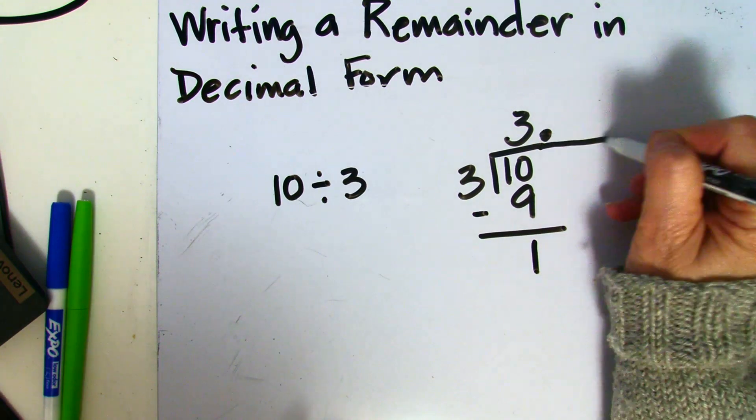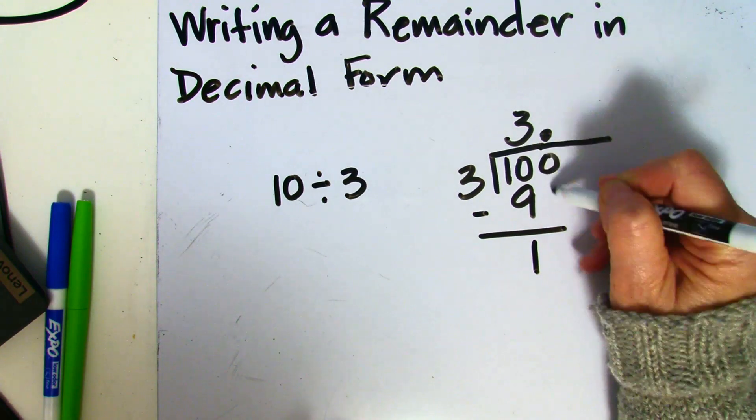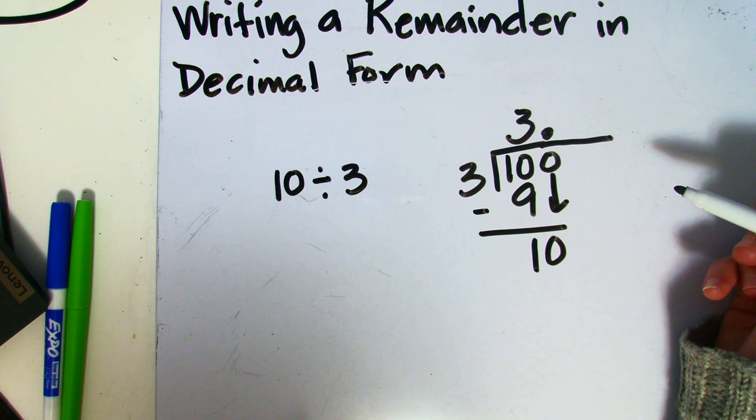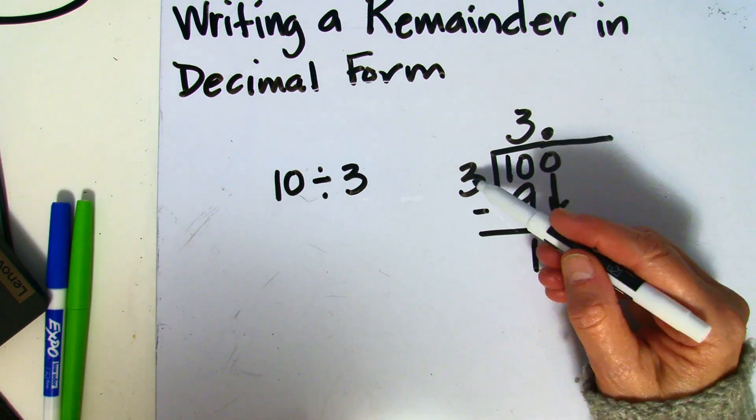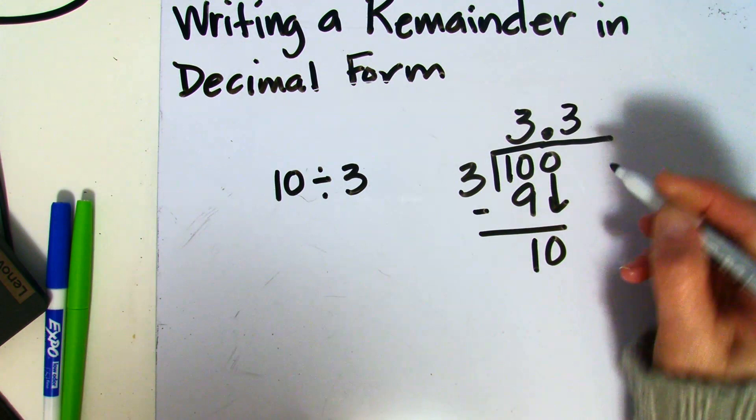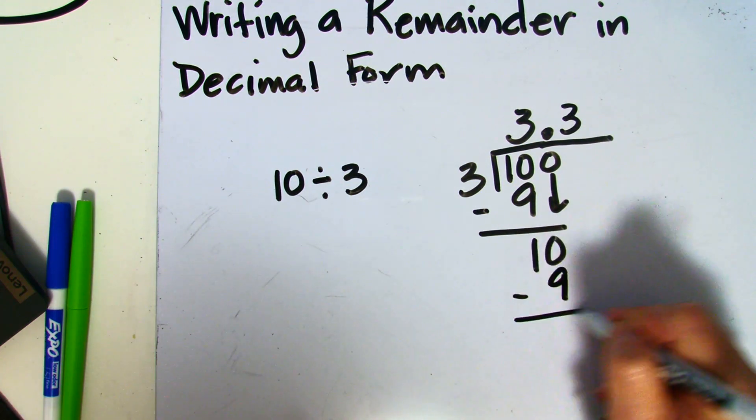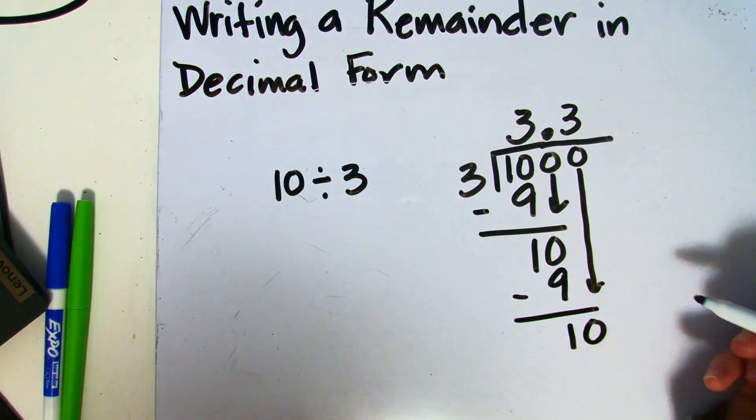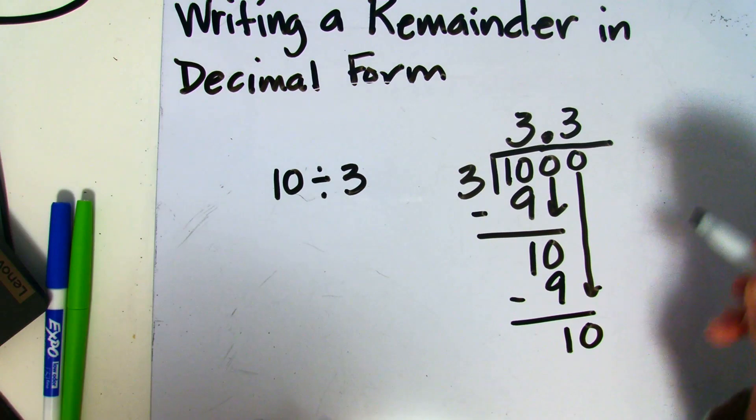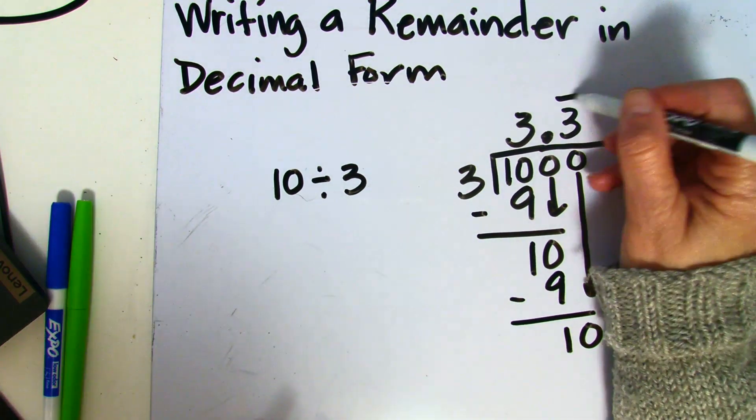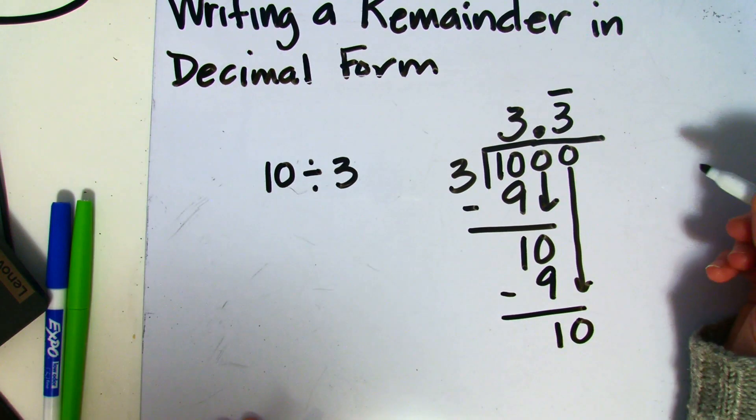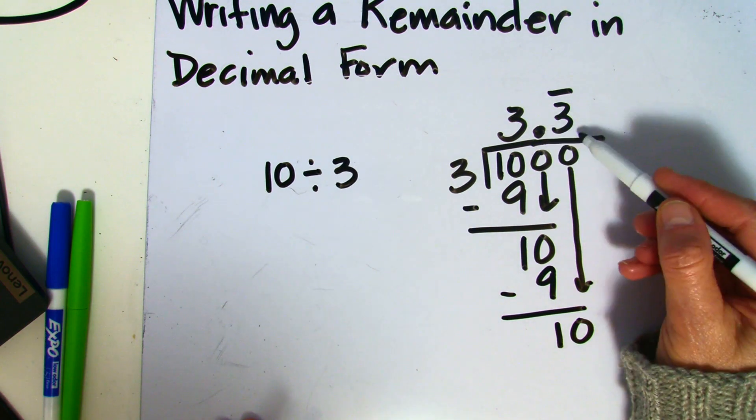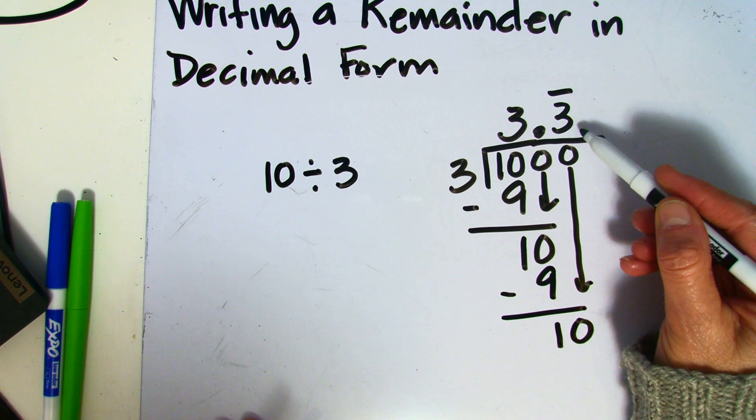We're going to add a decimal point, bring down a zero, and then do the process of dividing again. Now notice that we're getting 10 again. And 3 goes into 10 3 times. 3 times 3 is 9. And if I were to bring down another zero, we would again have a 10. This is going to continue. This is a special kind of decimal. It's a repeating decimal. This means that after the decimal point, I'm going to continue to get 3's as my answer.